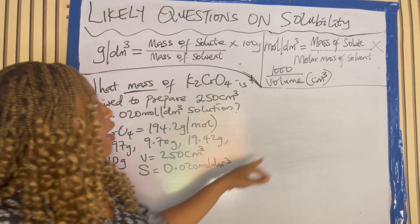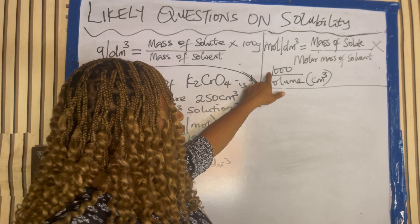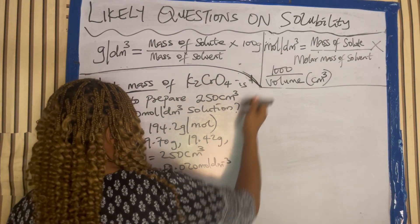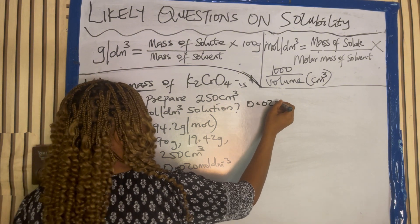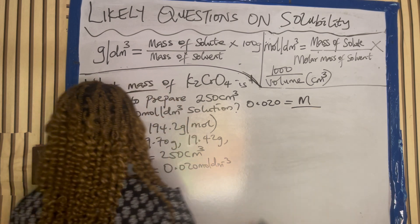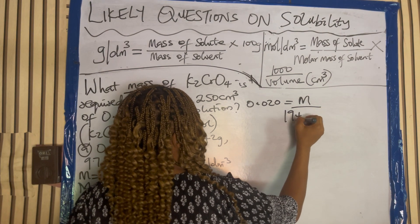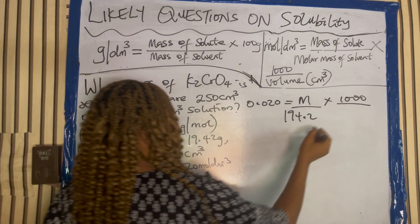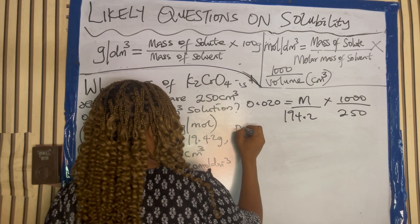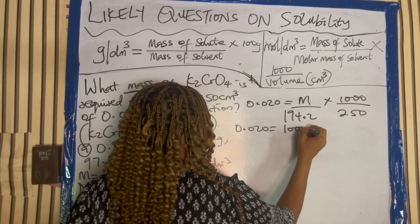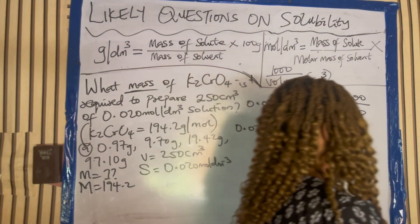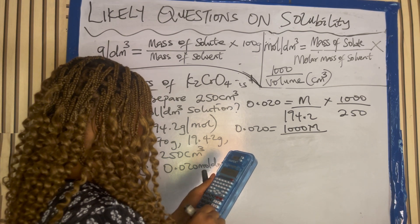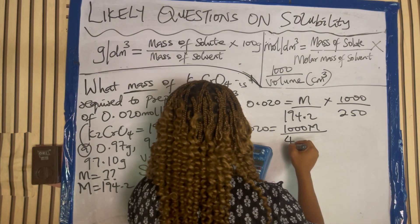Now in this case you are given the molar mass, you have your 1000, you are given volume, and you are given mole per dm cube. So you are looking for mass. Do your substitution: mole per dm cube is 0.020, which equals mass in gram over molar mass 194.2, times 1000 all over volume 250 cm cube. Pressing the calculator: 194.2 times 250 gives us 48,550.